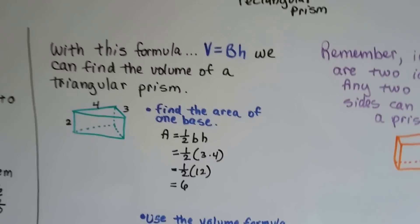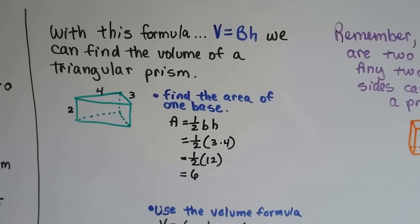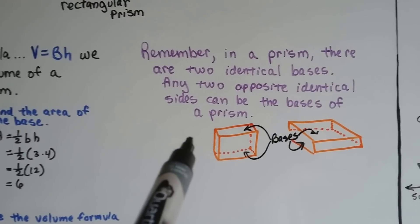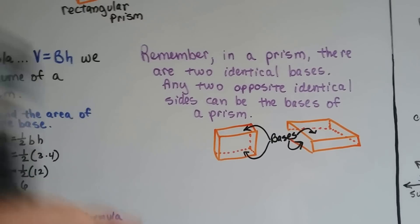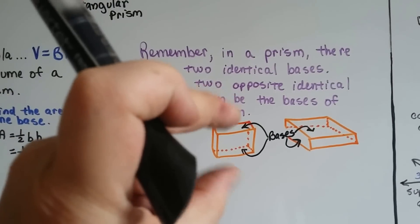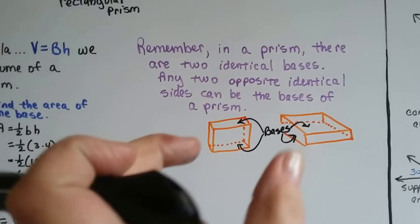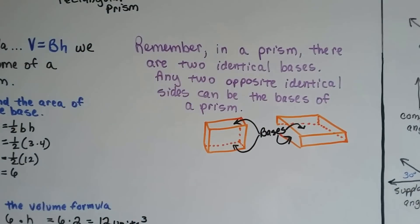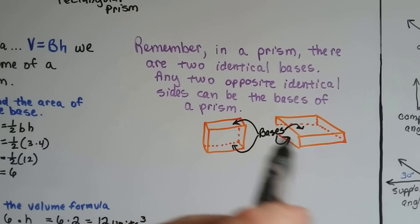With this formula V = B·h, we can find the volume of a triangular prism. Remember, in a prism there are two identical bases. Any two opposite identical sides can be the bases of a prism, as long as they're opposite and identical.